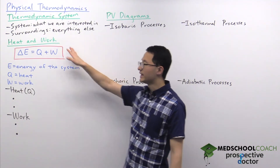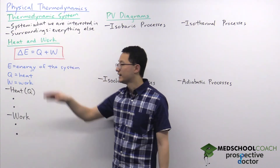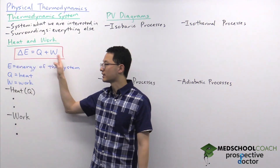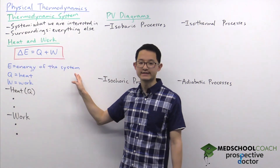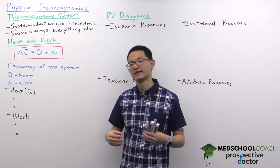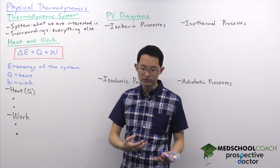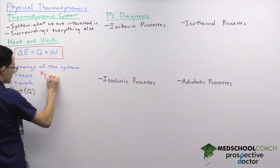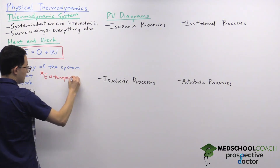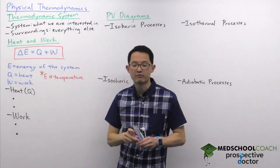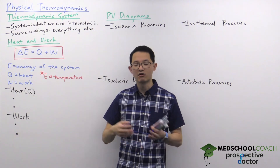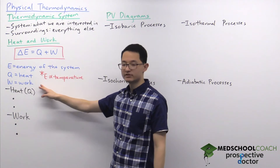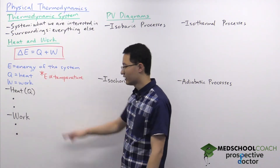Energy can be transferred through heat and work, represented by the equation delta E equals Q plus W. Here E represents the energy of the system, which can either gain or lose energy. For the MCAT, it's important to know that the energy of a system is directly proportional to its temperature, so temperature can be used as a readout to determine whether a system gained or lost energy. Q stands for heat and W stands for work.